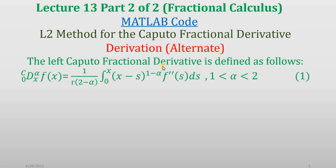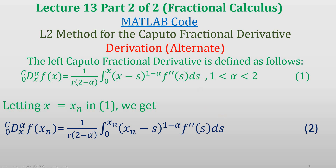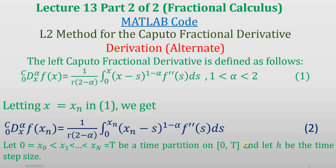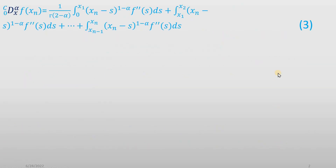As we know, the left Caputo fractional derivative is defined by equation 1. Let's replace x by x_n in equation 1 to obtain equation 2. We have an interval from 0 to T, partitioned so that the lower limit is x_0 equal to 0 and the final point is x_n equal to T, giving n plus 1 grid points in total. In equation 2, I have broken the interval from 0 to x_n into several subintervals: from 0 to x_1, then x_1 to x_2, and so on, yielding equation 3.